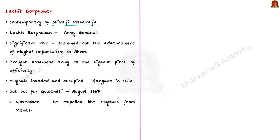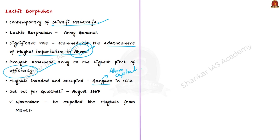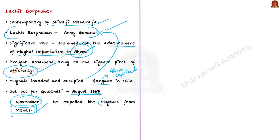Lachit Borphukan was a contemporary of Shivaji Maharaj. He played a significant role in stemming the advancement of Mughal imperialism in Ahom and is known for bringing the Assamese army to the highest pitch of efficiency. Prior to the British invasion, Mughals invaded and occupied the Ahom capital Gargaon in 1662, forcing the Ahom king to flee to the hills. It was during this time that Lachit Borphukan, an army general, made his entry and became the most towering personality of Assam's history. He set out for Guwahati in August 1667 and by November that year expelled the Mughals from the last Ahom frontier at Manas.